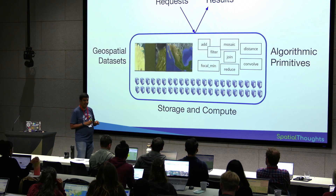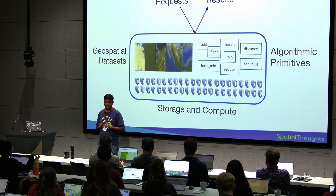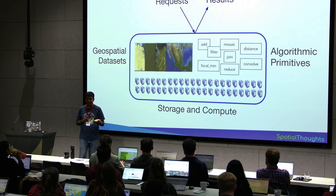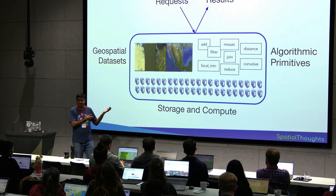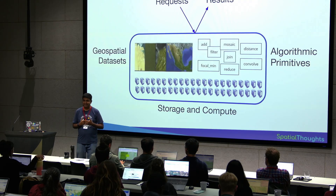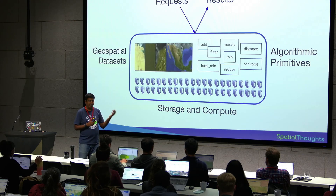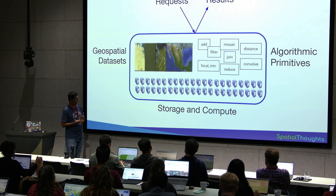If you tell Earth Engine: I'll give you 100 images, process them one after the other — Earth Engine will say, OK, the user wants them done sequentially, so I'm tied. I can only do them one after the other. So you have to describe a computation that allows Earth Engine to work in parallel. That's why you need to write code that allows Earth Engine to distribute the work.